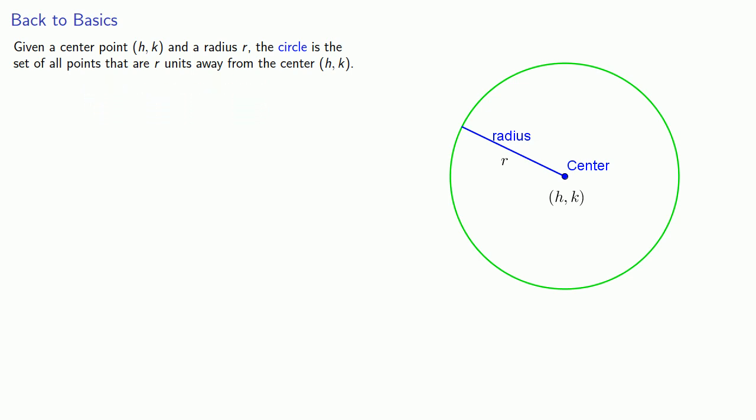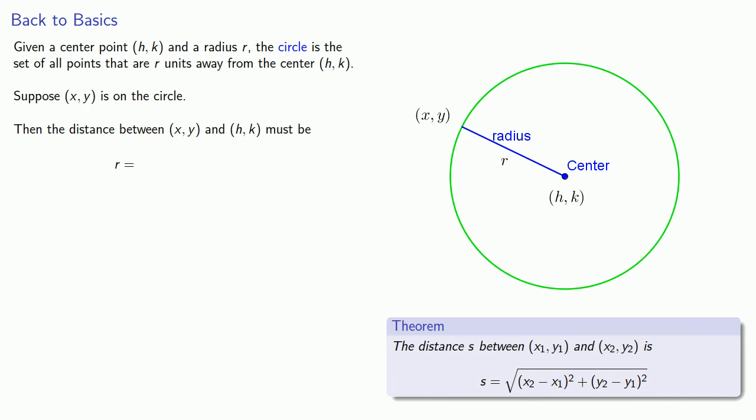Now, we'd like an equation that tells us something about the coordinates of any point on the circle. So suppose my point (x, y) is on the circle. Then it must be the case that the distance between this point (x, y) and the center (h, k) has to be r. But we can use our distance formula to calculate what that distance is.